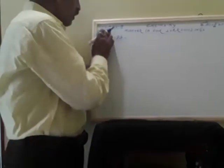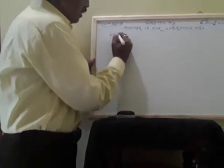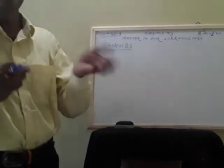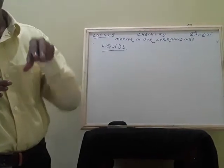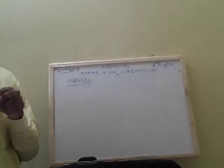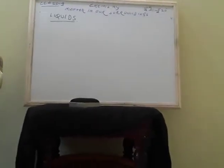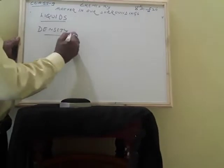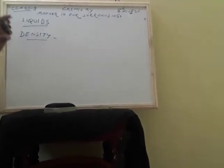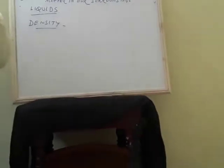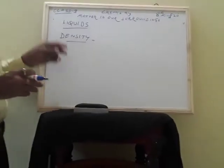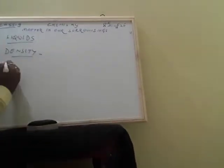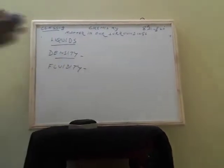Now coming to liquids. Liquids do not have shape, but they have volume. Volume is the space taken by a particular substance. Liquids take the shape of their container and have a particular volume. Liquids have density — the mass per unit volume is called density. Liquids can flow easily, meaning they have fluidity. Fluidity is the ability to move easily.